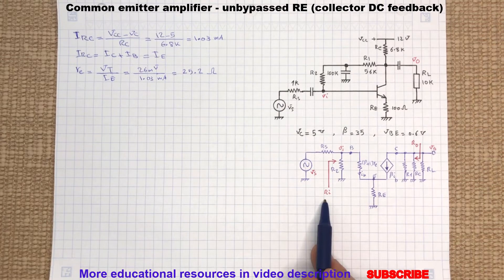To determine the amplifier input resistance, we will be looking into the base of the transistor as shown here in this AC equivalent circuit.